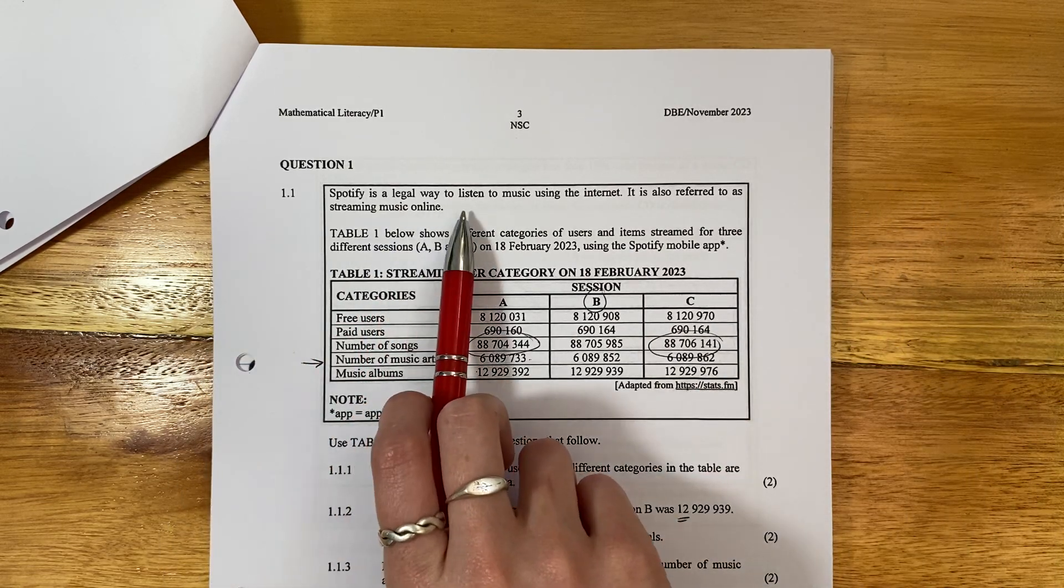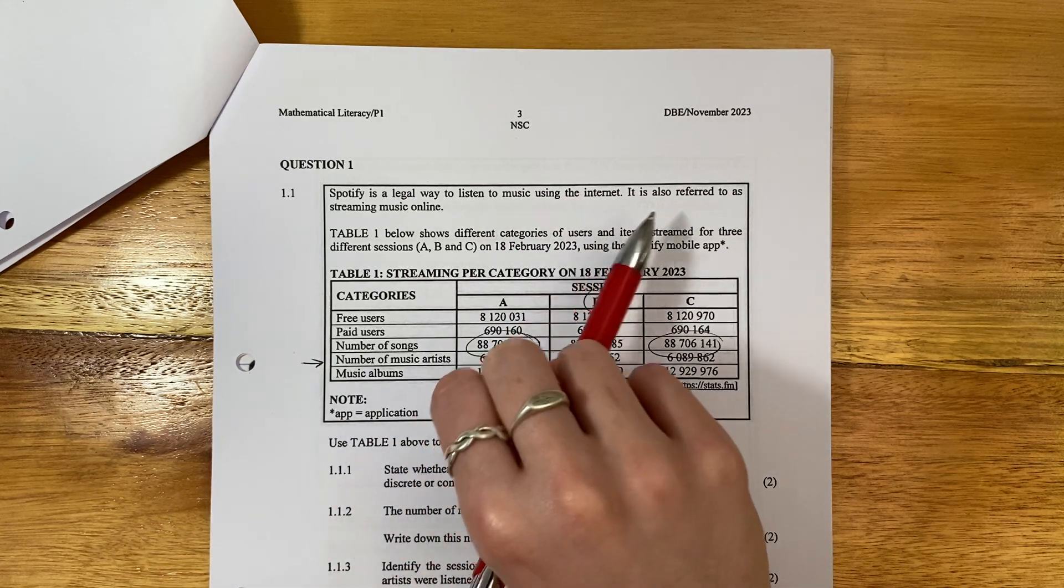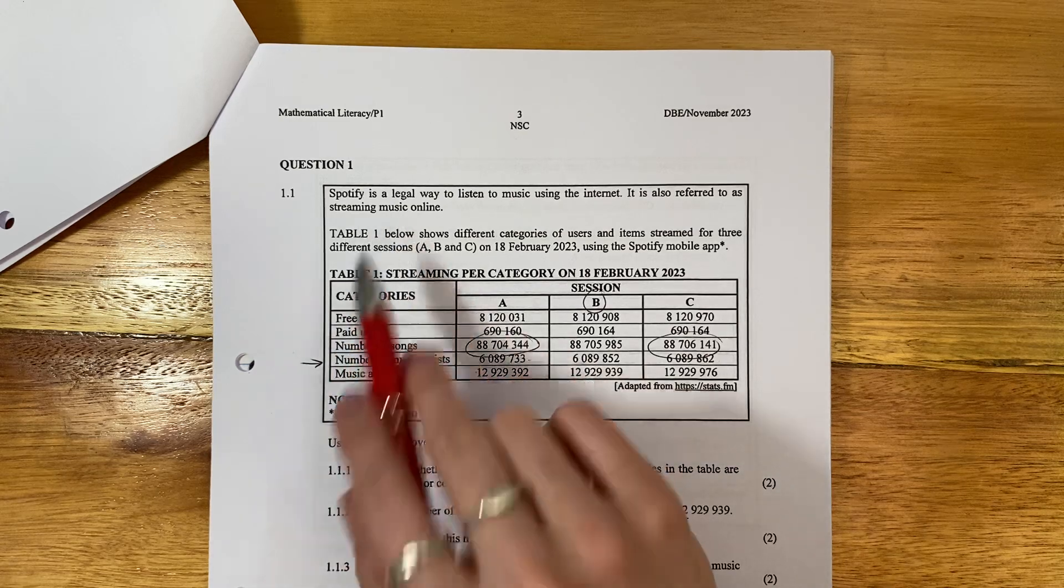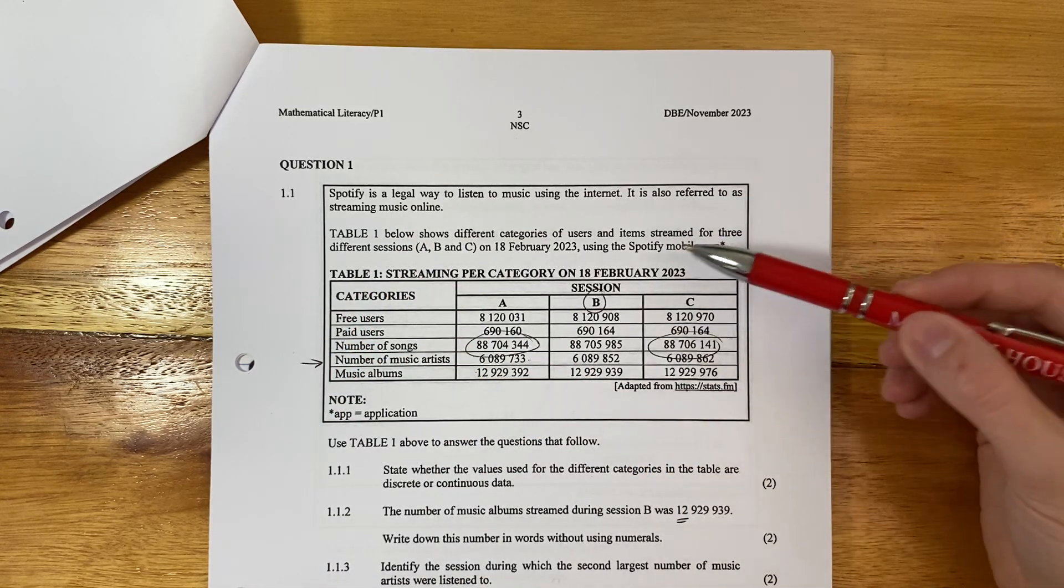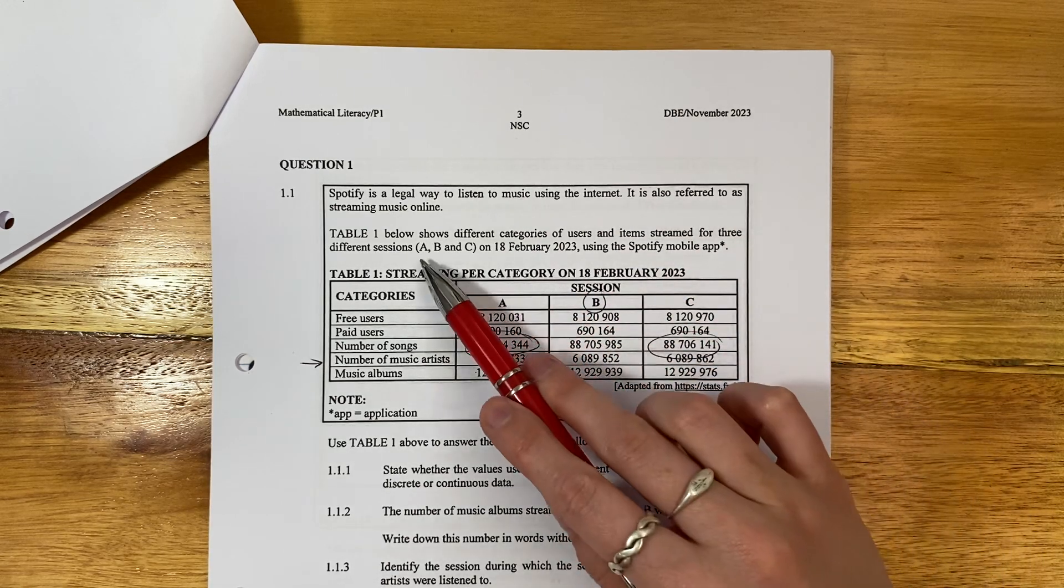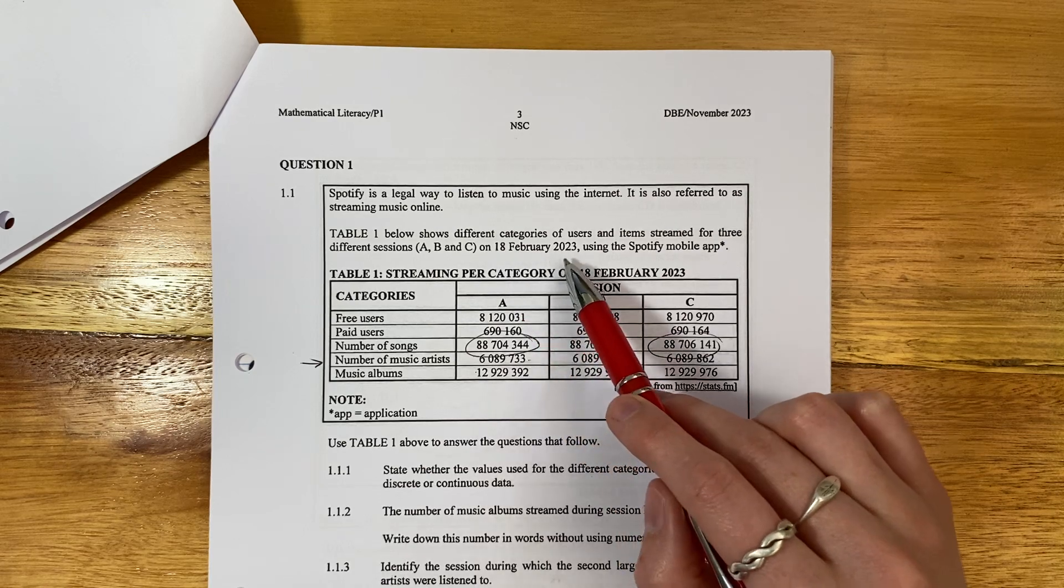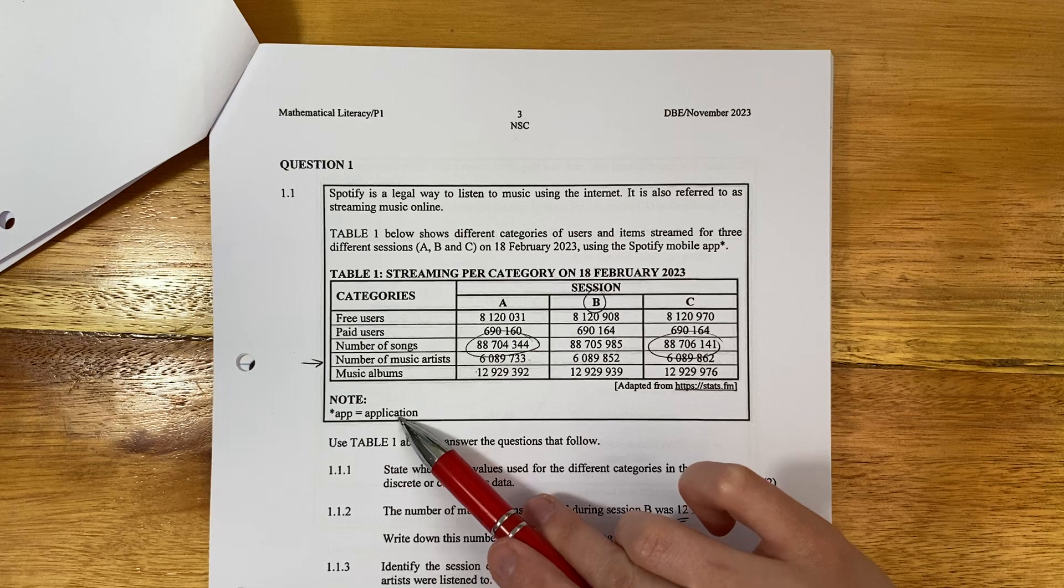Spotify is a legal way to listen to music using the internet. There's lots of illegal ways, but it's a legal way. It is also referred to as streaming music online. Table one below shows different categories of users and items streamed for three different sessions, A, B, and C on 18 February 2023 using the Spotify mobile app. App means application.